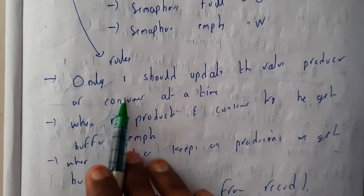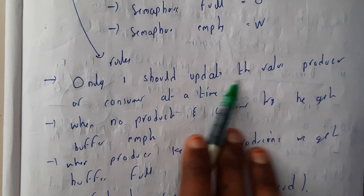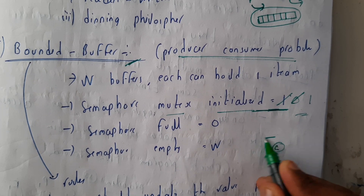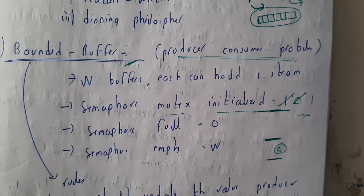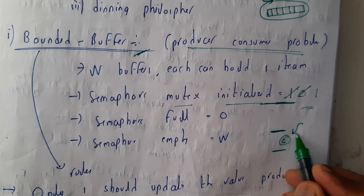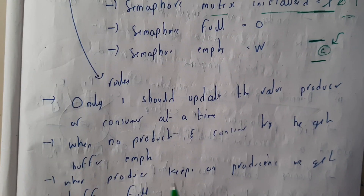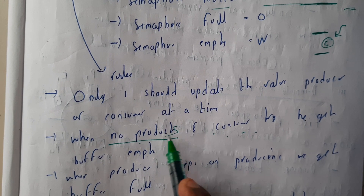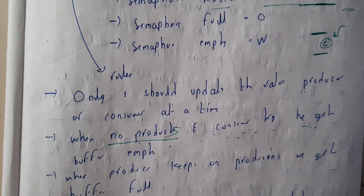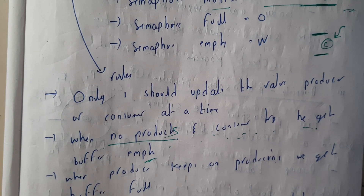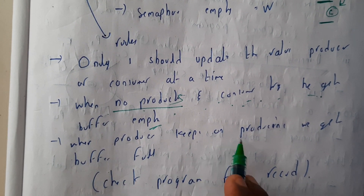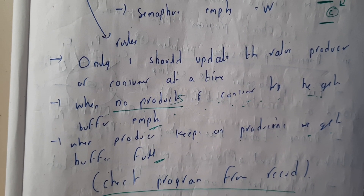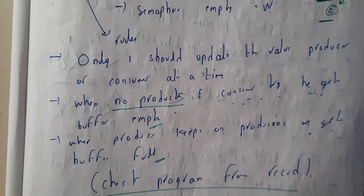Let's go through the rules once more. Only one process — producer or consumer — should update the value at a time, since we will be using a critical section. Before the critical section we use wait, and after that we use signal, so only one user should access the critical section. When no producer and no consumer tries to get or consume a product, it should display that the buffer is empty. When the producer keeps adding a product and the buffer is full, it should show that the buffer is full. You can check the full program in my recorded PDF.